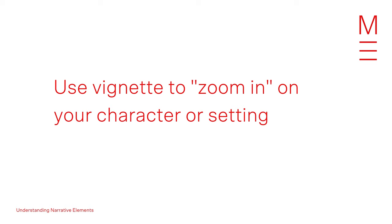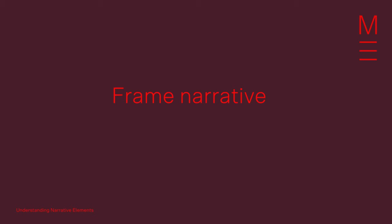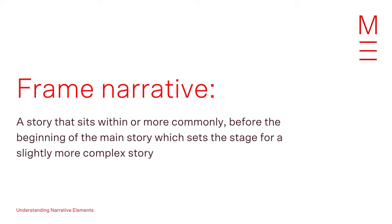Use vignettes within your story if you're looking to zoom in on your character or setting. Our next element of textual form: the frame narrative. A frame narrative is a story that sits within — or more commonly before — the main story, setting the stage for a more complex narrative and helping the reader to be more connected with distinct realities of the protagonist. A great example of the frame story can be found in the opening extract from Colombian author Gabriel García Márquez's novel 'Of Love and Other Demons.'